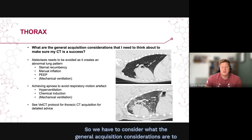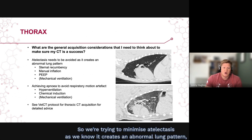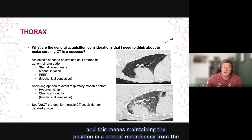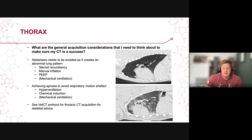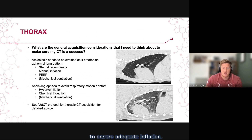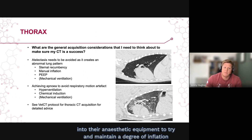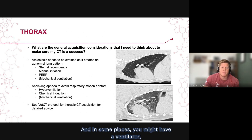General acquisition considerations are important to ensure your thoracic CT is a success. To minimize atelectasis, which creates an abnormal lung pattern, maintain the patient in sternal recumbency from the start to the end of the procedure. Manual inflation or lung recruitment maneuvers can help ensure adequate inflation. Some centers incorporate a positive end-expiratory pressure valve into their anesthetic equipment to maintain a degree of inflation throughout, and in some places a ventilator may be available.